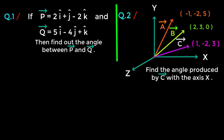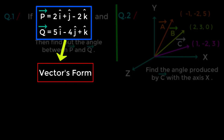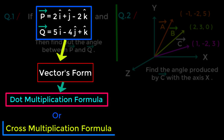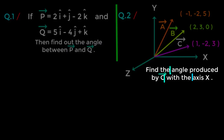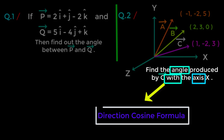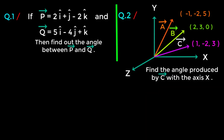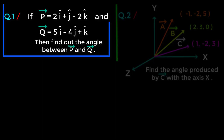Whenever we are asked to determine the angle between two vectors and we get vector form, then only two formulas can be applied: either the dot multiplication formula or the cross multiplication formula. Whenever we are asked to determine an angle with an axis, we will have to apply only the direction cosine formula. Now we will solve these two problems one by one.